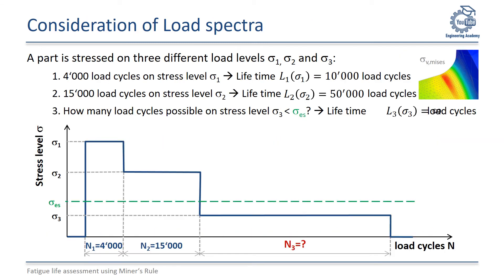It is extremely rare that technical systems run at a constant load level during operation. In general, the load changes during operation. That's why calculating service life under a load spectrum is of great interest. We look at an exemplary load spectrum consisting of three load levels. The first, sigma1, has a service lifetime of 10,000 load cycles and is run for 4,000 cycles. Then a lower stress level sigma2 occurs, with a sole lifetime of 50,000 load cycles, run during 15,000 cycles. The question is: how many load cycles are possible at stress level sigma3, which is lower than the fatigue-endurable stress sigma ES? Theoretically, the lifetime at this load level would be endless, but different approaches exist to predict a more precise number.